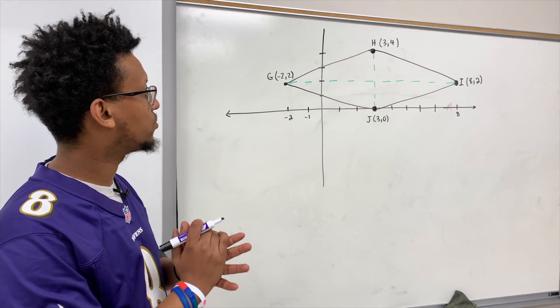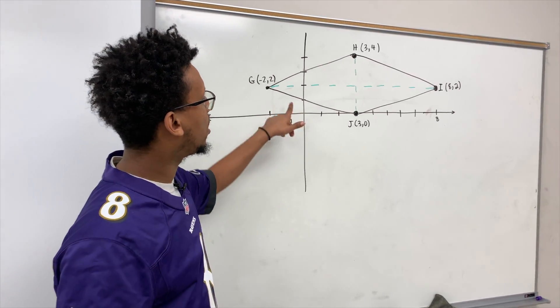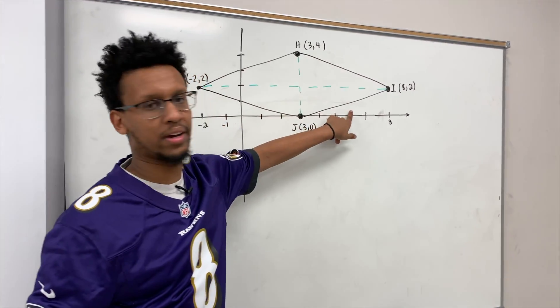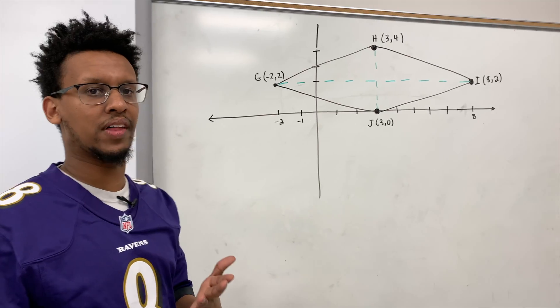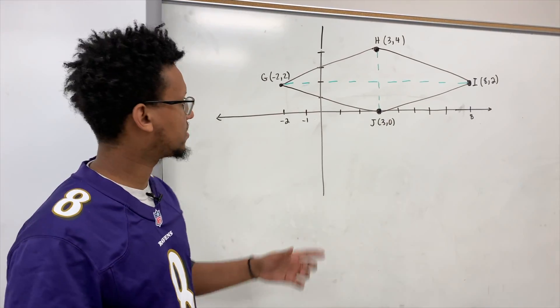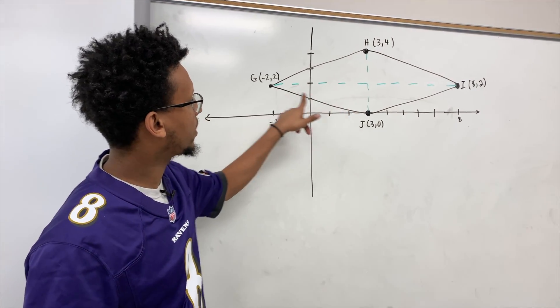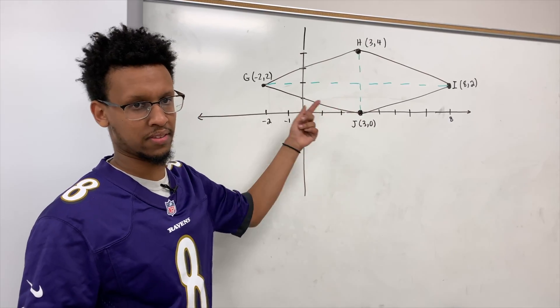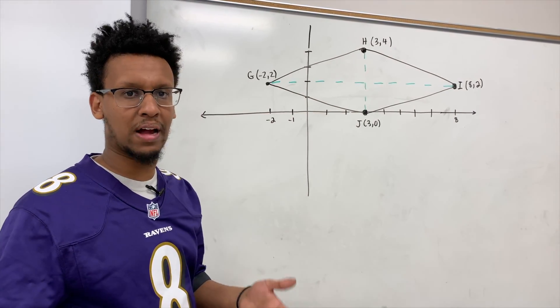So first thing that we need to realize about a rhombus is all four sides are congruent. So we need to prove that. But the problem is the sides are diagonal, so we are not able to just count them. So we have to use Pythagorean theorem.